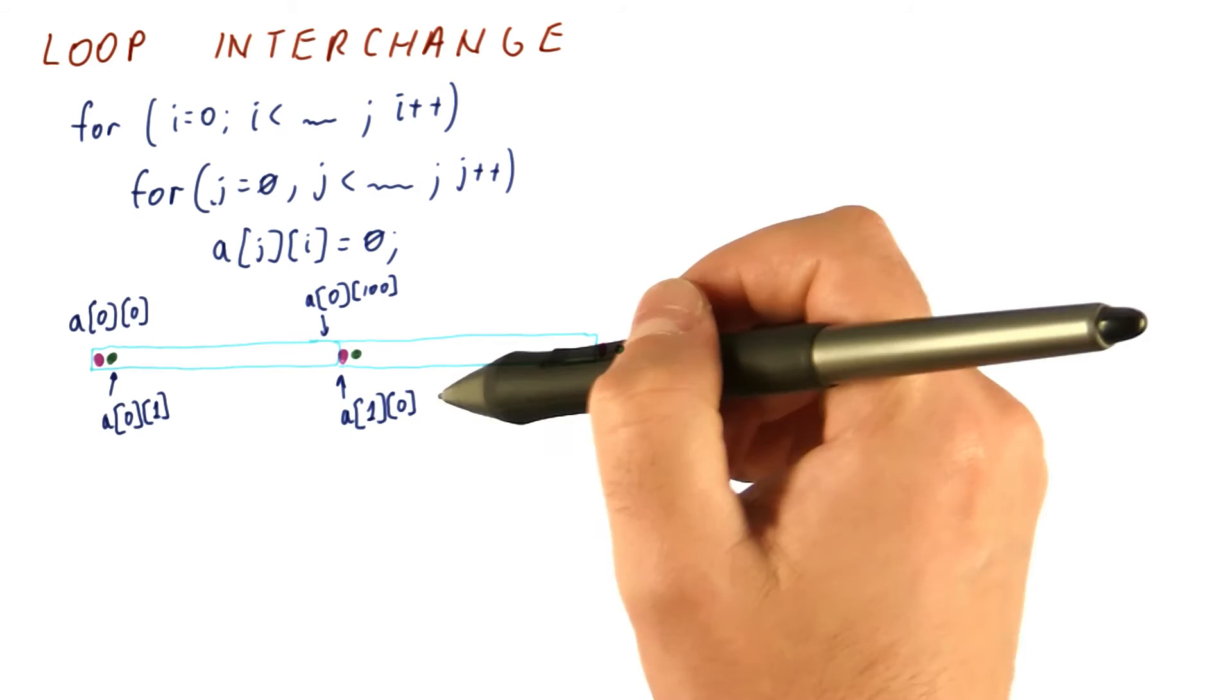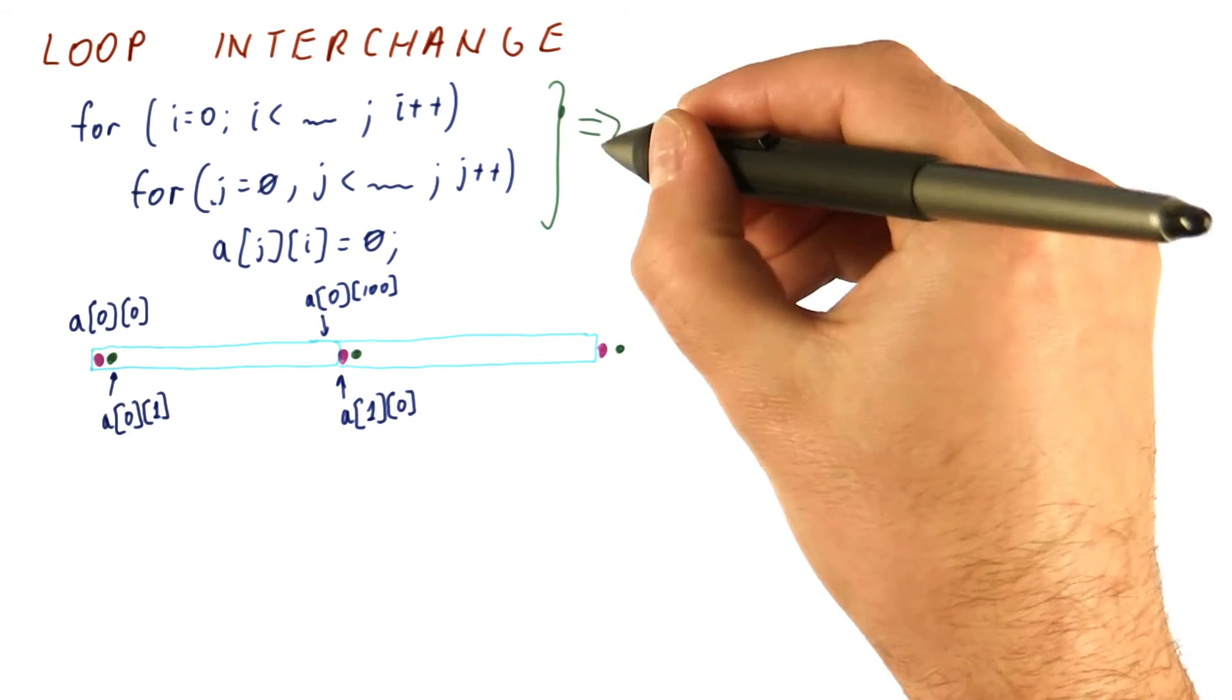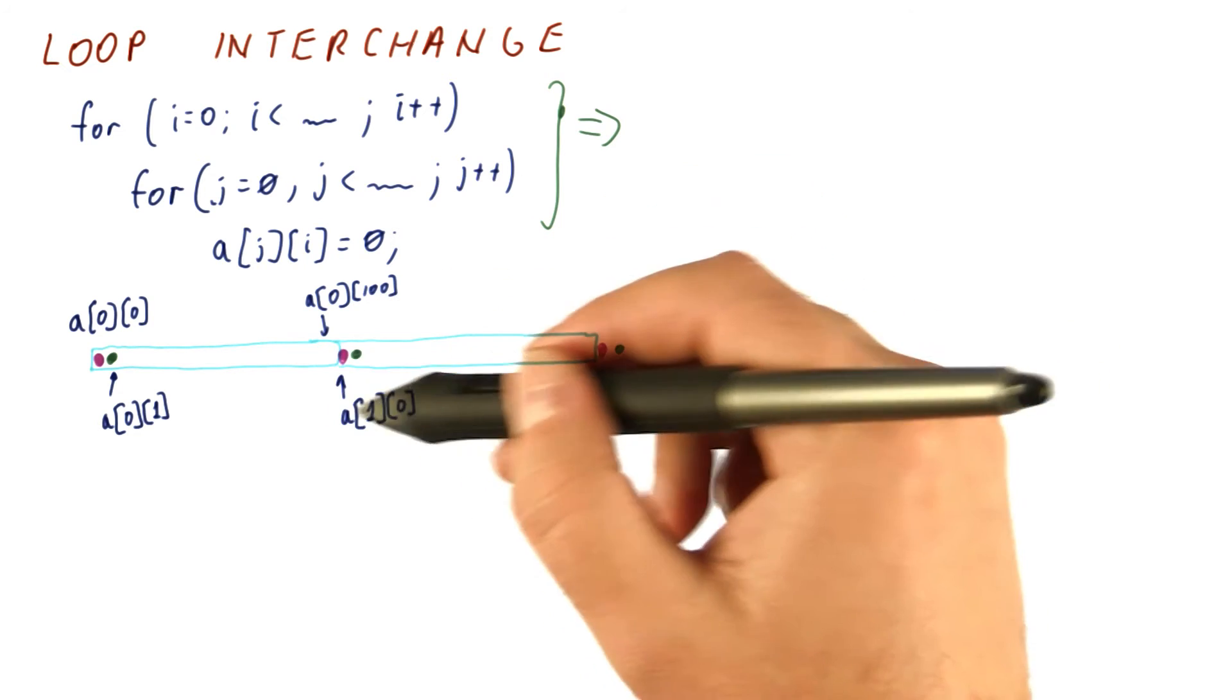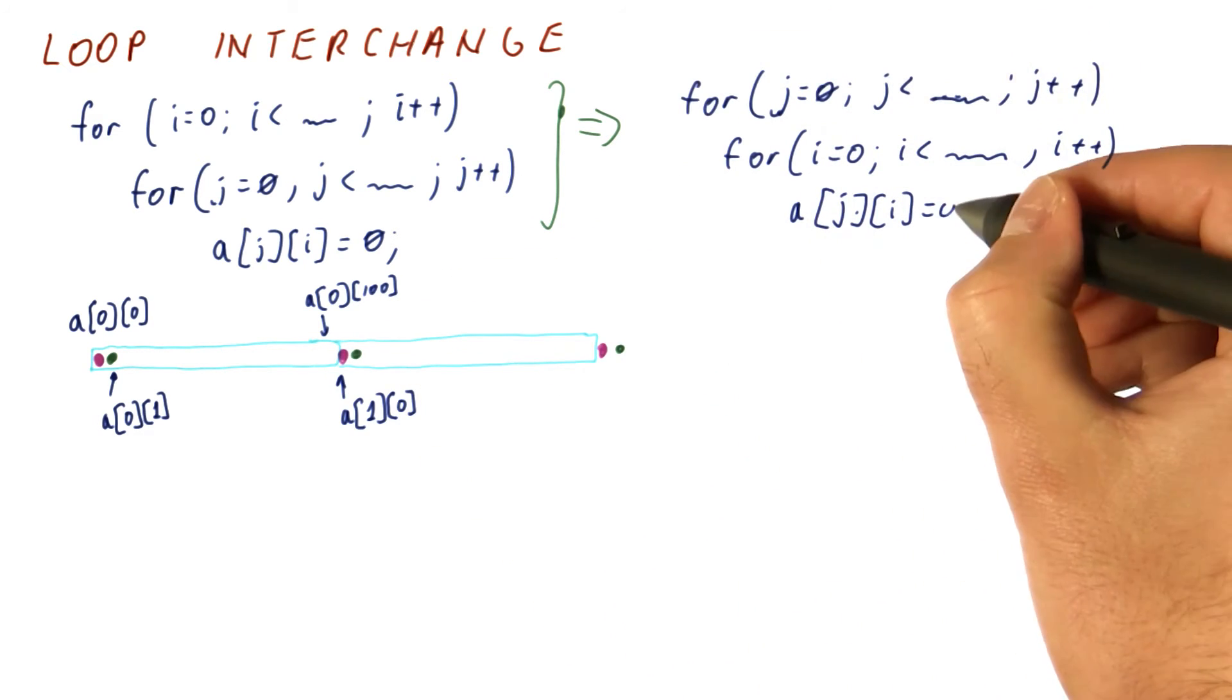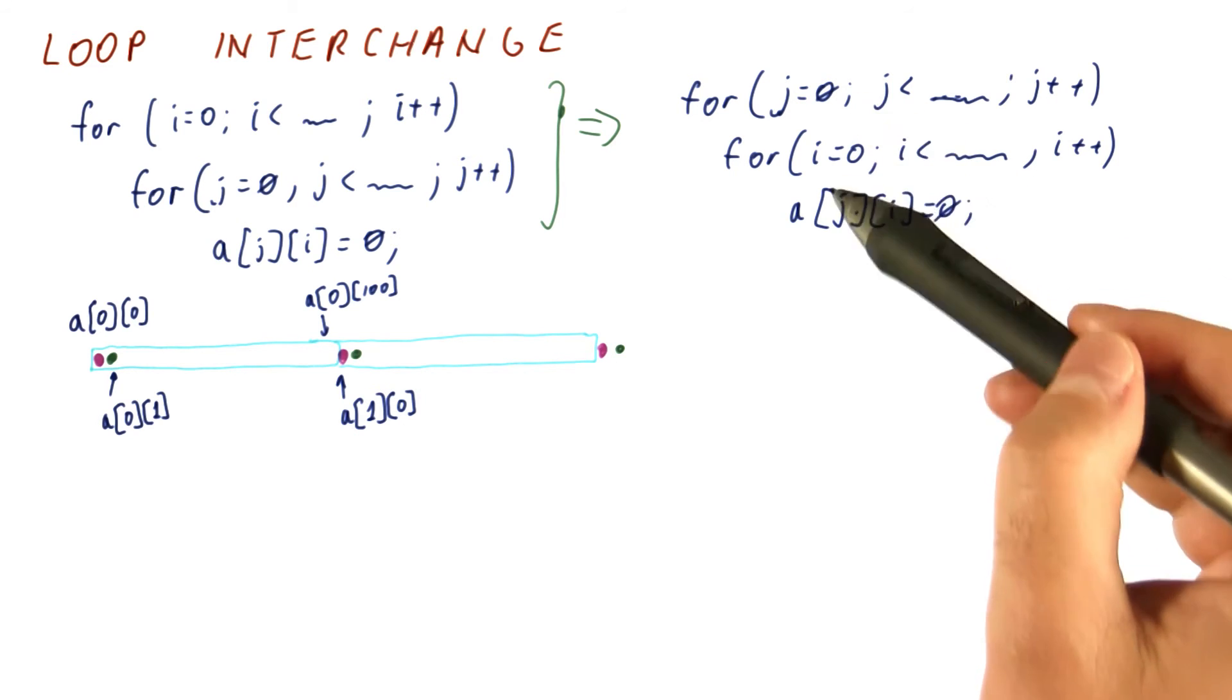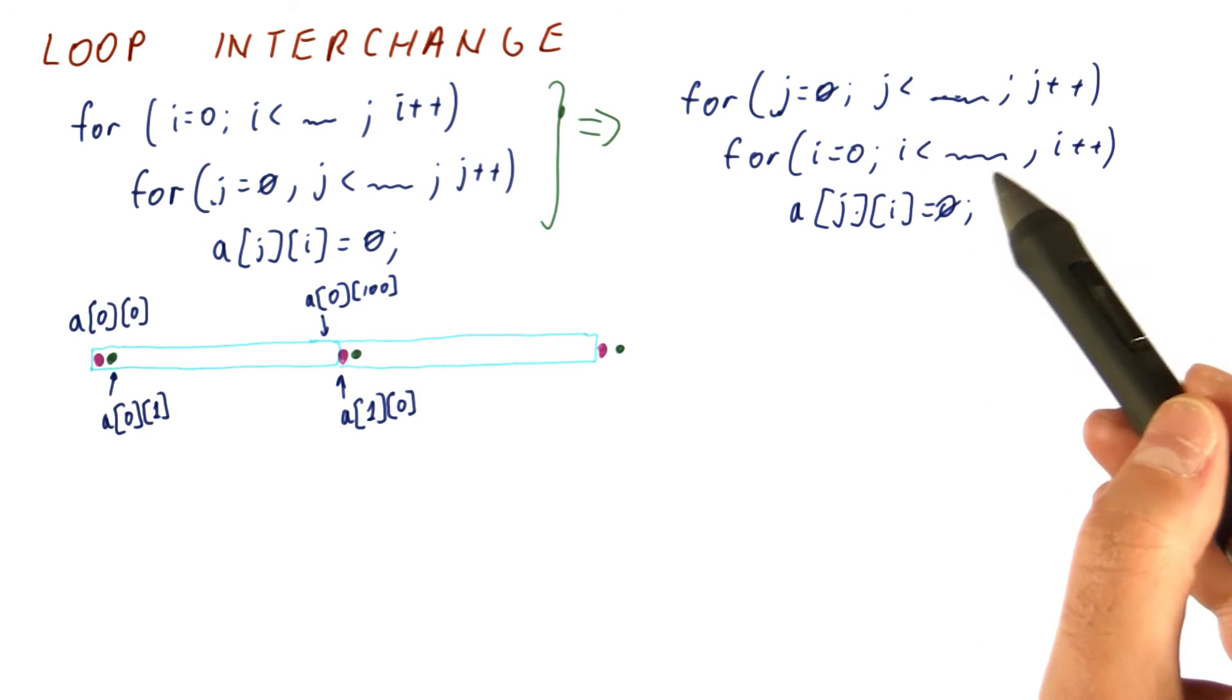So we have one miss per access here. A good compiler will detect that the order of these loops doesn't match the layout in memory, and it's going to perform what is called a loop interchange, which amounts to simply swapping the two loops.